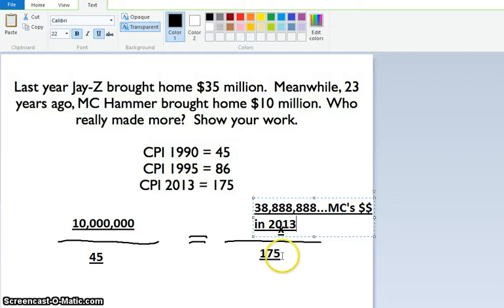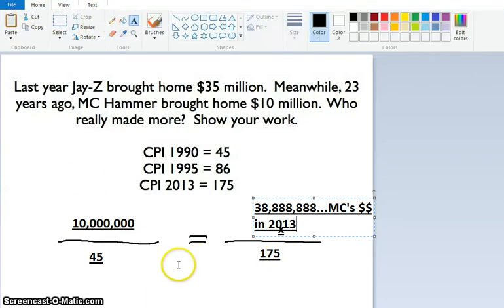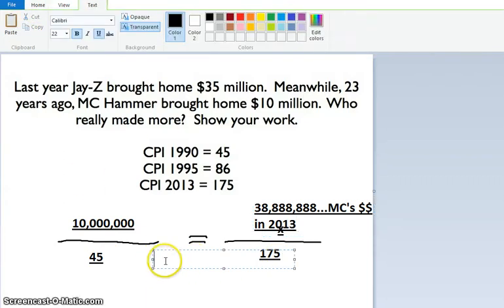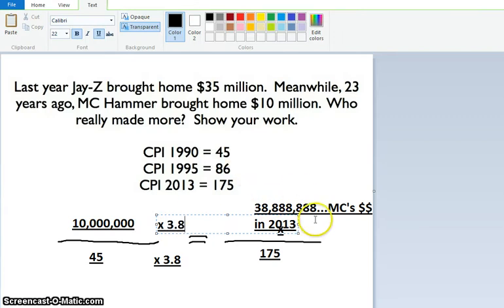So if you think about $45 times what gets you $175? Well, I did the math, it's actually times 3.8, and so if we times by 3.8 up here on top, we get $38 million.